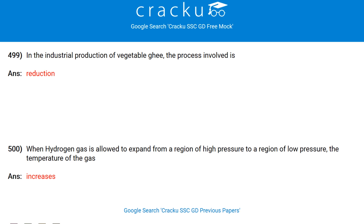In which year did the Chernobyl nuclear power plant accident cause escape of radionuclides into the atmosphere? 1986. In the industrial production of vegetable ghee, the process involved is hydrogenation. When hydrogen gas is allowed to expand from a region of high pressure to a region of low pressure, the temperature of the gas increases. To take a free mock on SSC GD constable, please do a Google search for Cracku SSC GD free mock. For previous SSC GD papers, search for Cracku SSC GD previous year papers. Thank you.